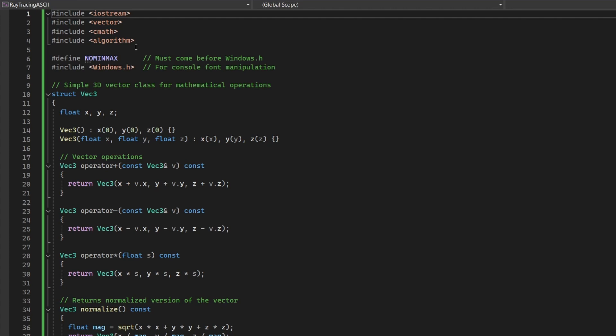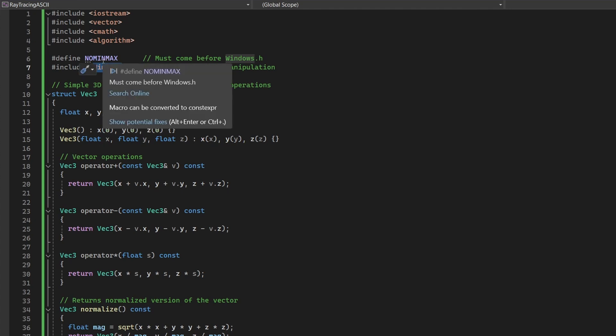The source code is in the description, and we are going to work in C++. The program begins with the inclusion of essential libraries: iostream for input-output operations, vector for managing dynamic arrays, cmath for mathematical functions, and algorithm for utility functions like std::max. Additionally, the Windows-specific header file Windows.h is included to manipulate console font settings. A preprocessor directive NOMINMAX is added to prevent conflicts between Windows macros and C++ standard functions.